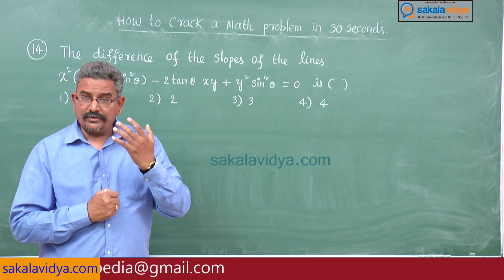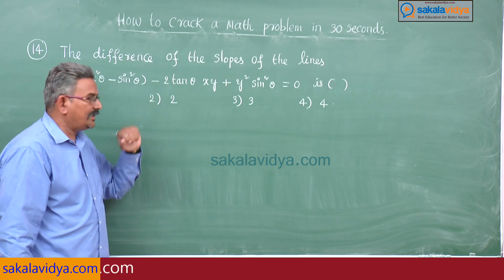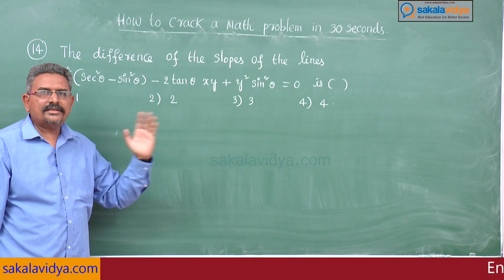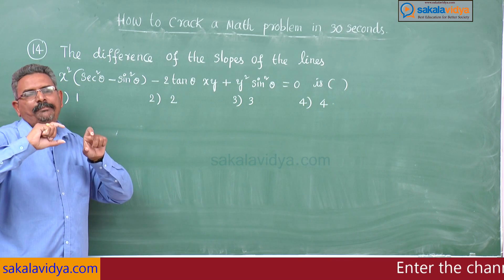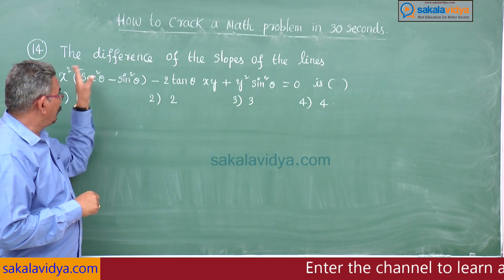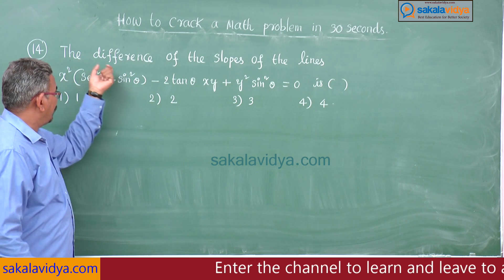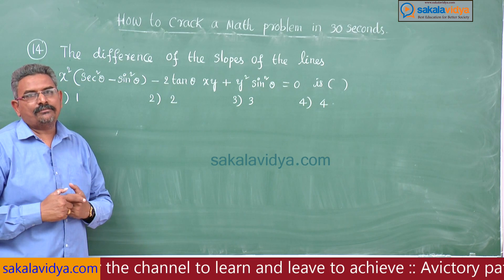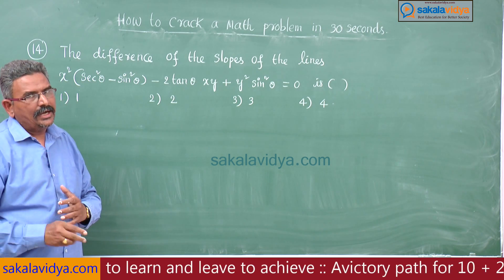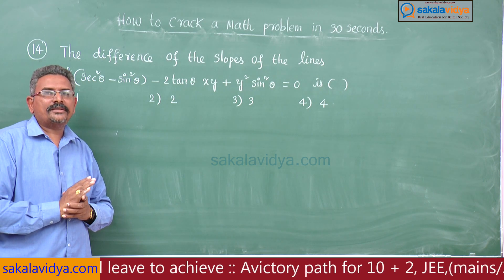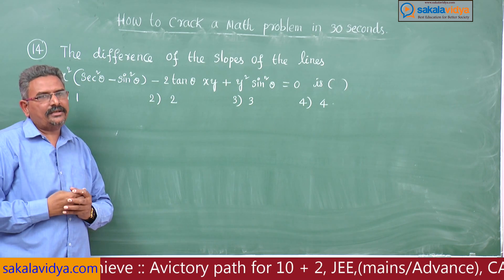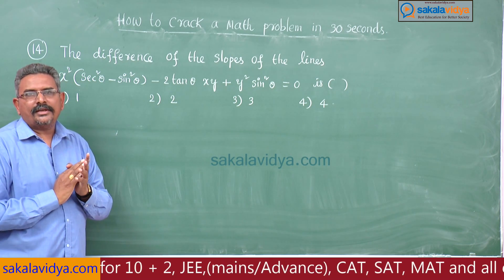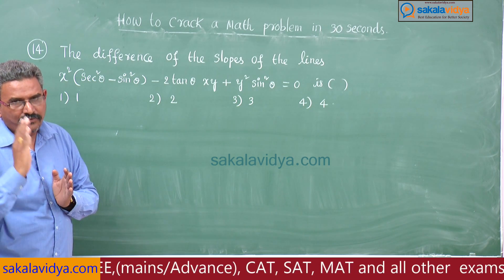You may ask why theta = 45 degrees — because tan 45 = 1. So first put theta = 45 degrees, find the pair of straight lines equation. The keyword in the problem is 'difference of the slopes,' meaning we need to find |m1 - m2|. We can formulate this for further problems using a direct formula. So substitute theta = 45 degrees.